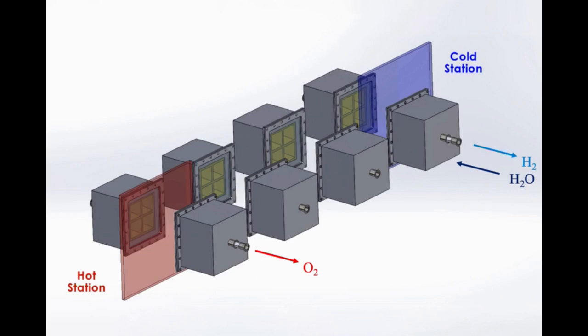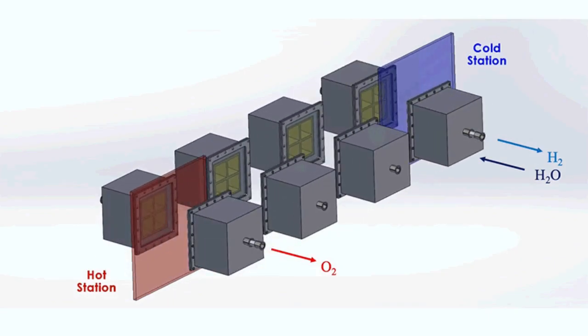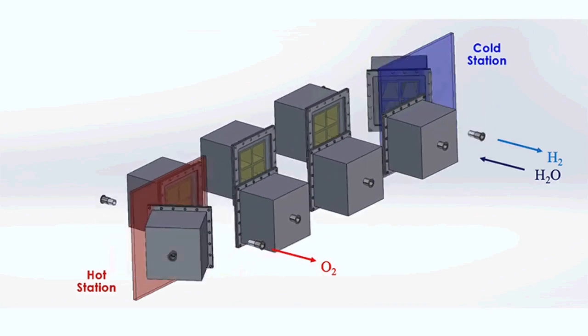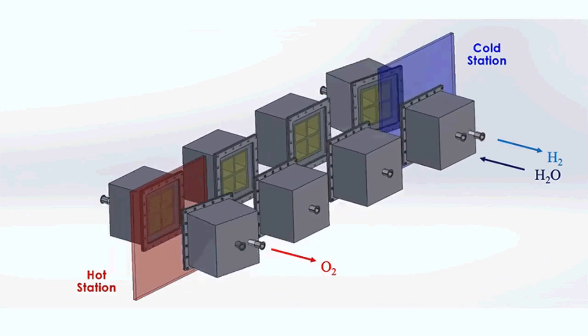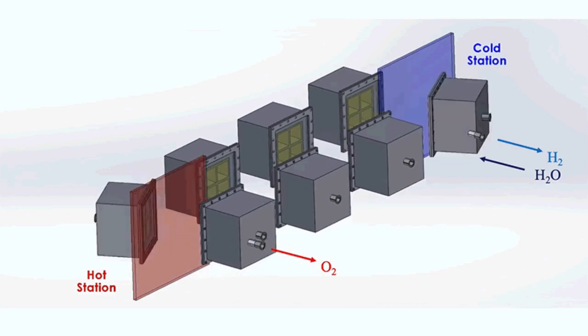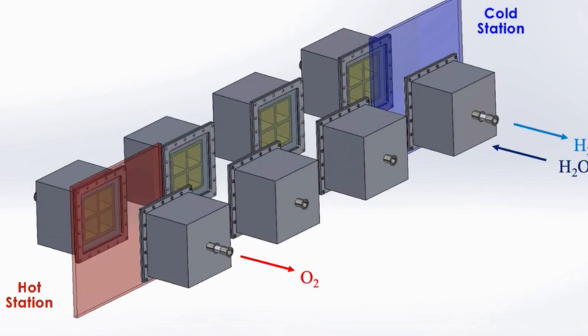The researchers also added a second set of reactors that would circle around the first train, moving in the opposite direction. This outer train of reactors would operate at generally cooler temperatures and would be used to evacuate oxygen from the hotter inner train, without the need for energy-consuming mechanical pumps.